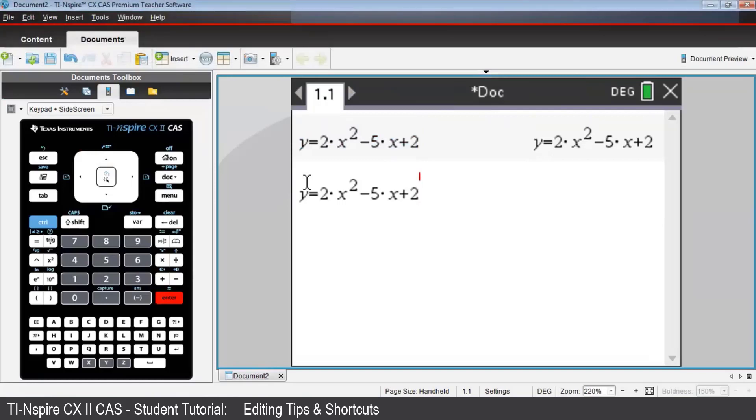Now we can use the directional arrows to move the cursor through the expression. Since we just want to change the sign of 5x, press the left arrow five times so that the cursor is now between the subtraction, or minus sign, and the 5.